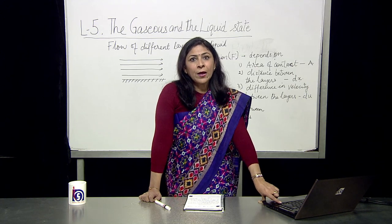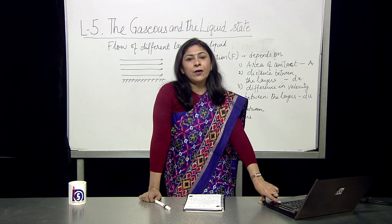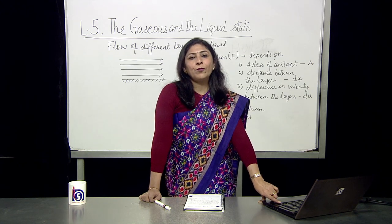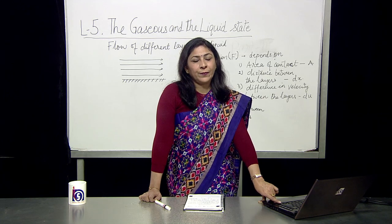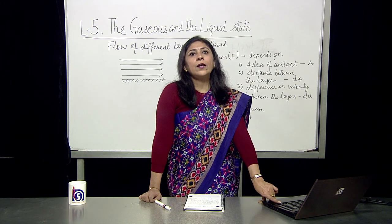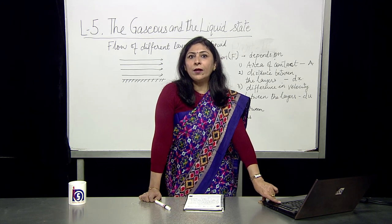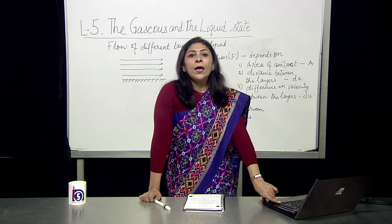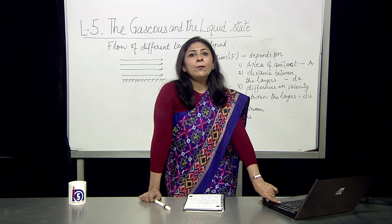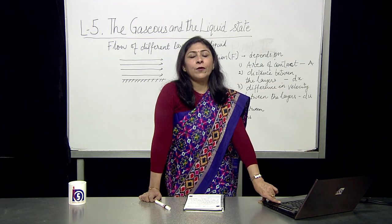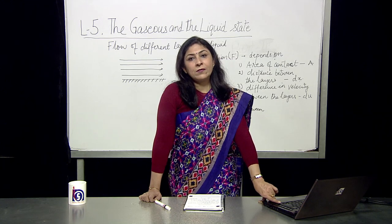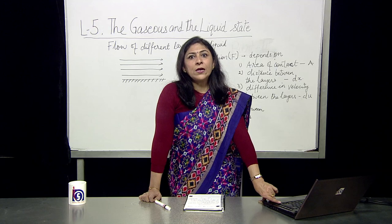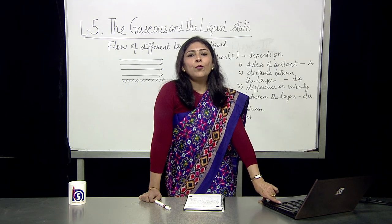Let us sum up what we have studied. Boiling point is the temperature at which the vapor pressure of the liquid becomes equal to the external pressure. Surface tension is the force acting on an imaginary line of unit length drawn on the surface of the liquid, acting perpendicular to it towards the liquid. Due to surface tension, liquids tend to have minimum surface area and show phenomena of capillary rise or fall and curved meniscus. Viscosity is the internal force of friction opposing the flow of liquid. Thank you.